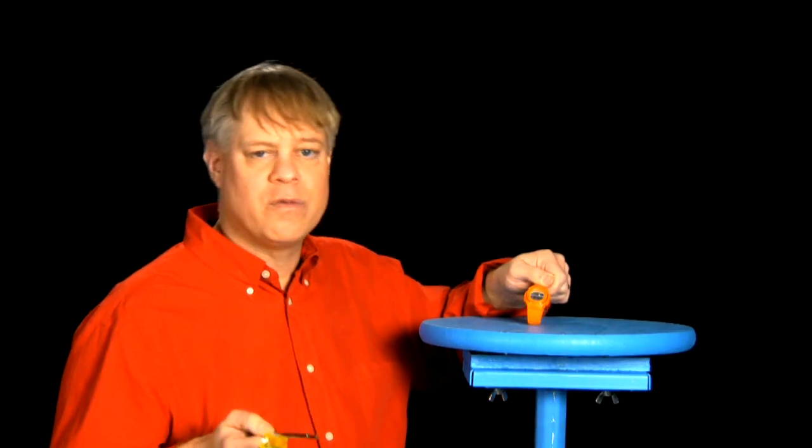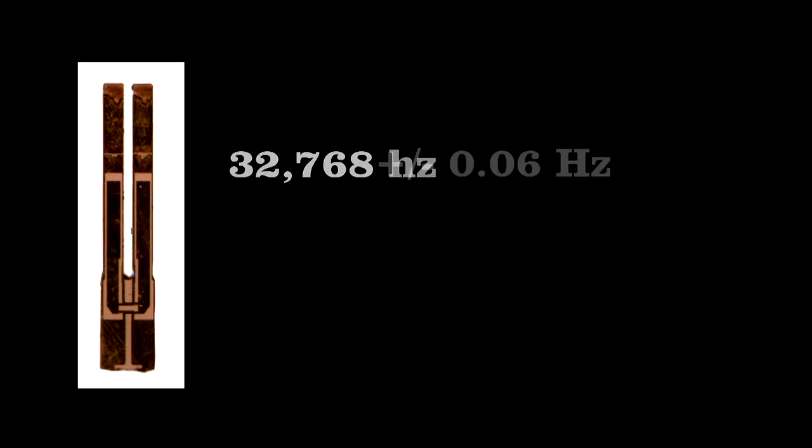One more interesting thing about these digital watches is how these tiny tuning forks are made. On a production line, engineers must make these quartz tuning forks so accurate that they vibrate at 32,768 times a second plus or minus one six hundredths, about two parts per million in frequency. If that frequency differs by one six hundredth, the watch will be off by more than one minute a year.